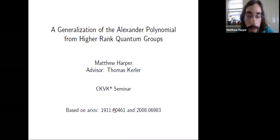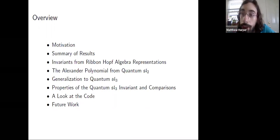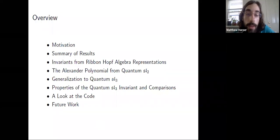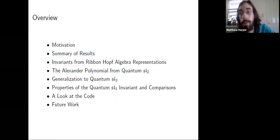This work is based on two preprints I have available on arXiv. First, I'd like to motivate some of the work, give some background, and then go over some of the main results. Then I'll go through the procedure of getting invariants from representations of Ribbon-Hopf algebras, and then go through the construction of the Alexander polynomial from quantum SL2.